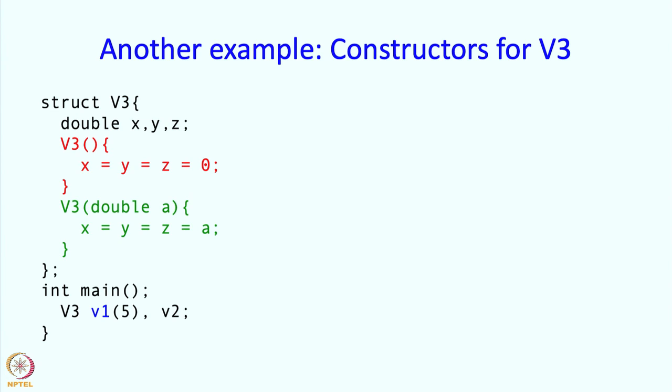Here is an example of constructors for V3. This first constructor does not take any arguments and it just sets all the members to zero. This constructor takes three arguments. This constructor takes a single argument and it sets all the members to that single argument. Are these useful? Well, if they are not useful, you can define your own. But I am just showing this to show you what the possibilities are.